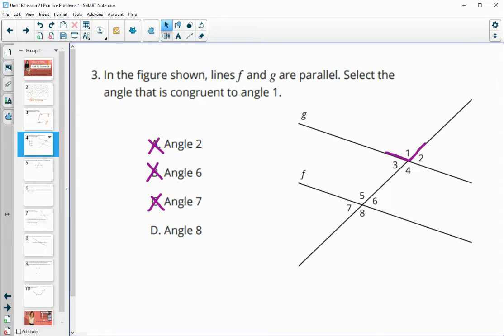And then angle eight. So here's angle eight. Angle eight is corresponding to angle four. And angle one and angle four are across from each other as vertical angles. So they would be equal to each other.